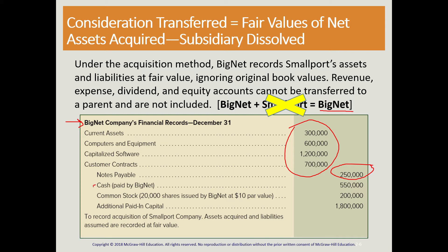The accounts being credited in this entry relate to the acquisition price or consideration transferred. We have our $550,000 of cash and 20,000 shares of stock issued. We always credit common stock at par value. Additional paid-in capital is the difference between the fair market value per share less the par value per share, multiplied by the 20,000 shares issued, which gives us $1.8 million. This entry is made in Big Net's financial records.